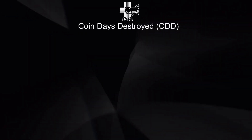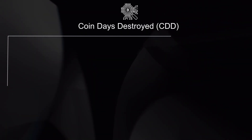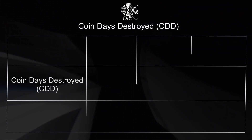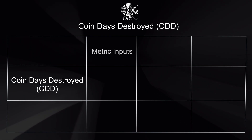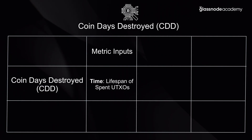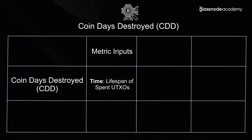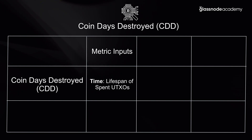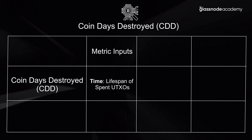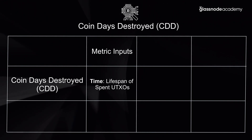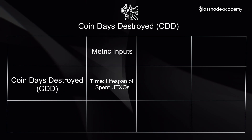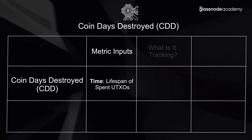So Coin Days Destroyed is very much a multiplication of time. As an input, we're looking at the lifespan of those UTXOs that were spent on that particular day and we're multiplying it by how much volume was actually spent. So we're getting a view on both the amount of coins that were moved as well as how old they are.